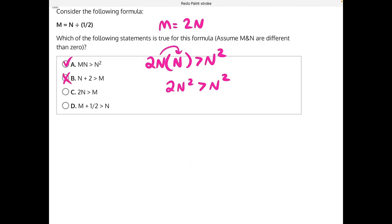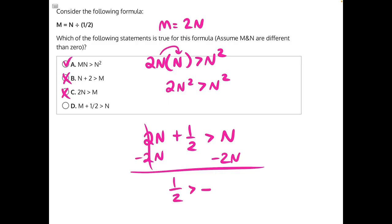And finally, for answer choice D, we have M, which is equal to 2N, plus 1 half is greater than N. Then, if we were to subtract 2N from both sides, these two N's would cancel, giving us 1 half is greater than negative N. 1 half could be greater than a negative number.